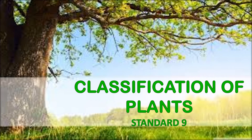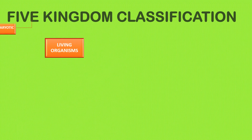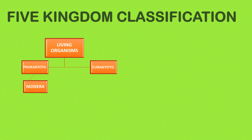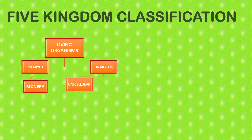In this video we will learn how plants are classified. All living organisms are classified according to the five kingdom classification. Living organisms are further divided into prokaryotic and eukaryotic cells. Kingdom Monera, the first kingdom — all prokaryotic organisms come under the kingdom called Monera, and those living organisms having eukaryotic cells are further subdivided.